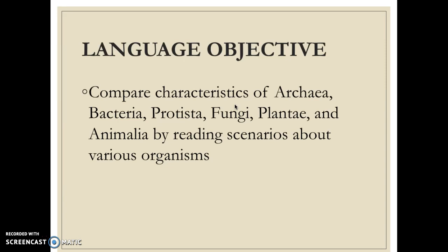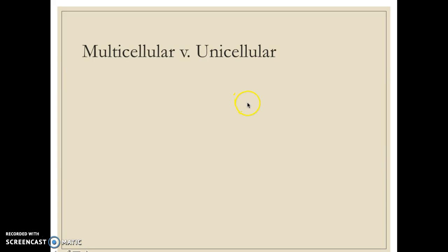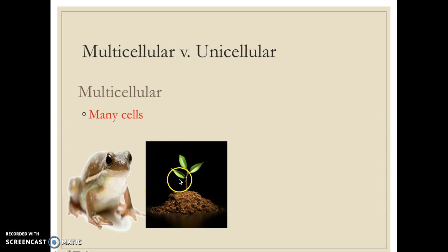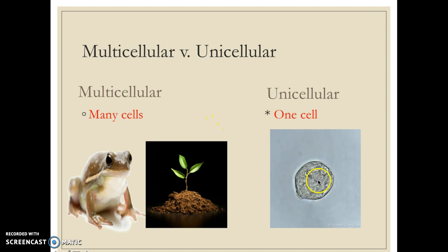A little bit of vocabulary we need to understand for this topic is the difference between multicellular and unicellular. A multicellular organism is one composed of many different types of cells, and usually these cells interact with one another to maintain a sustainable living condition. Unicellular is an organism composed of only one cell — examples include bacteria and amoebas. Multicellular means many different cells; unicellular means just one single cell.